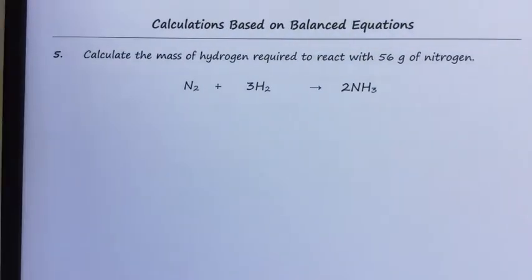Question 5: Calculate the mass of hydrogen required to react with 56 grams of nitrogen.